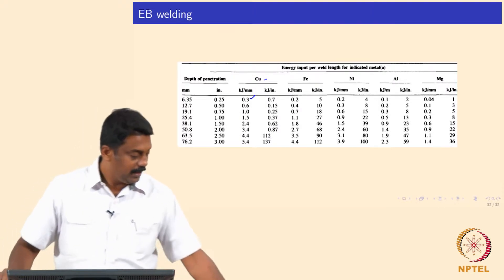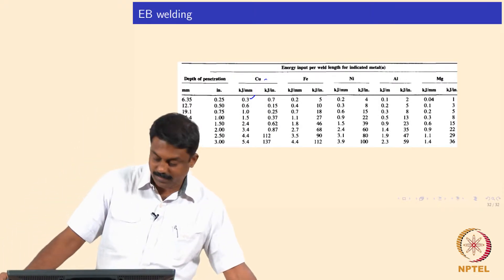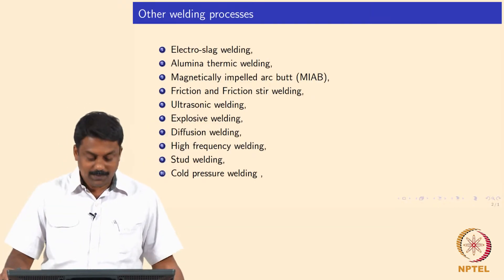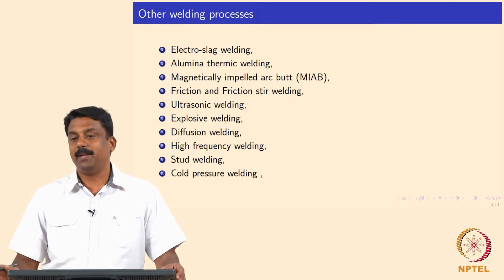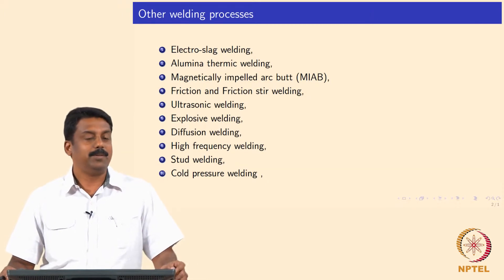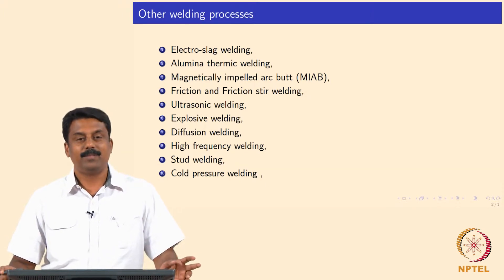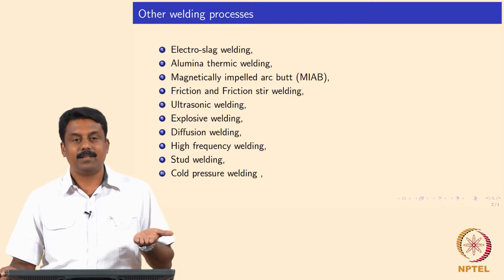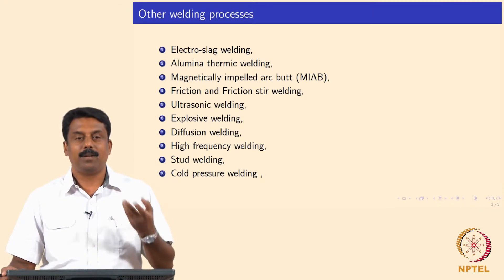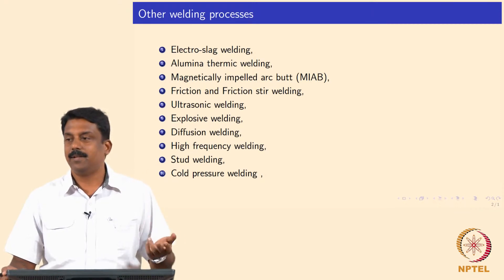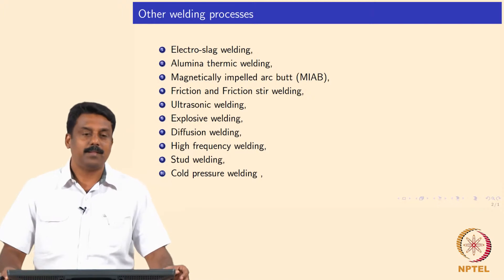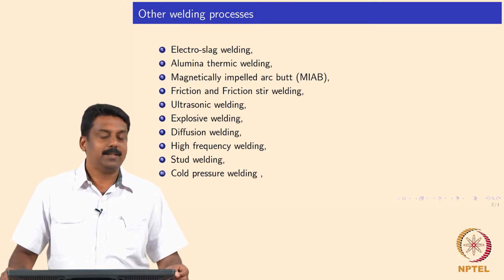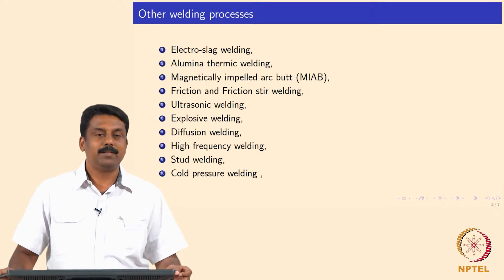We will move on to the other welding processes. We looked at arc welding processes: GTAW, GMAW, and resistance spot welding. In arc welding we also looked at variants of arc welding processes and the resistance welding processes — resistance spot weld, flash butt, resistance upset, percussion welds, laser welds, and electron beam welds.